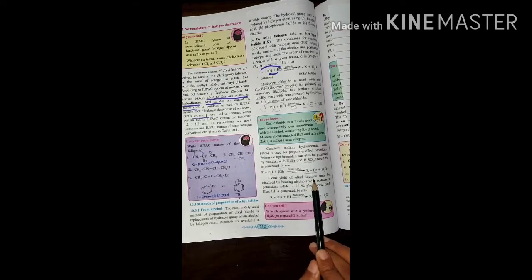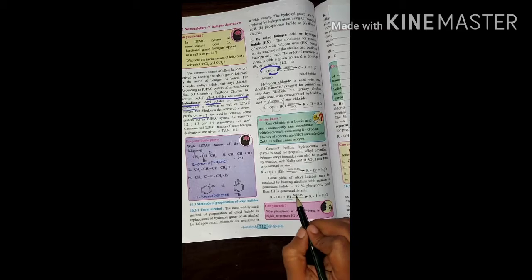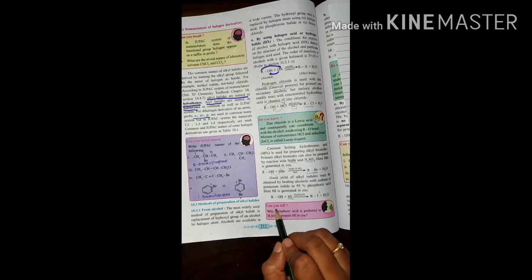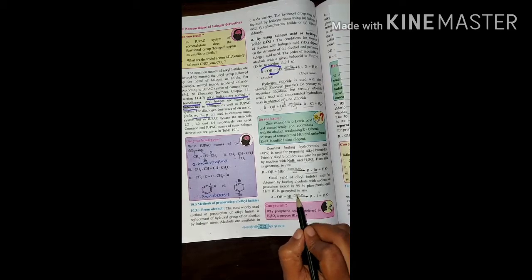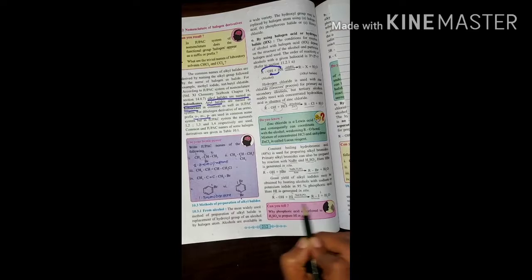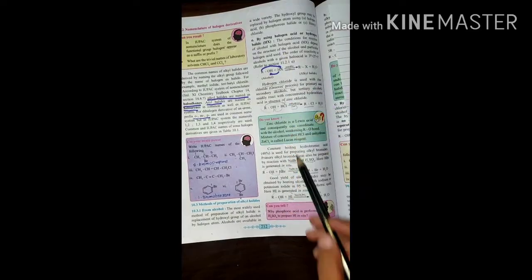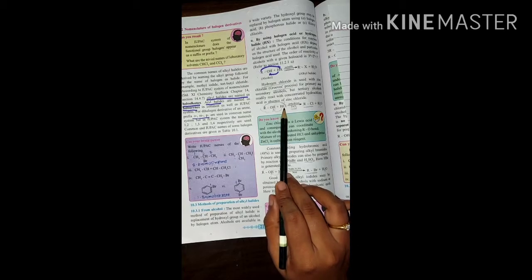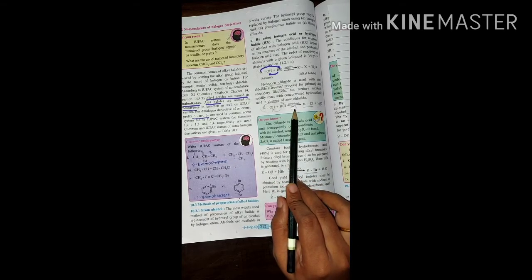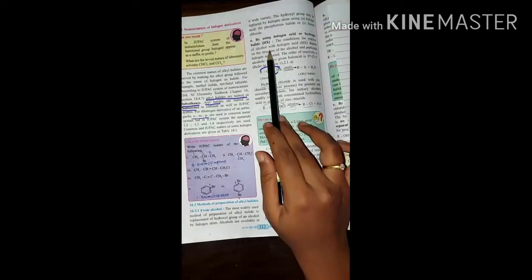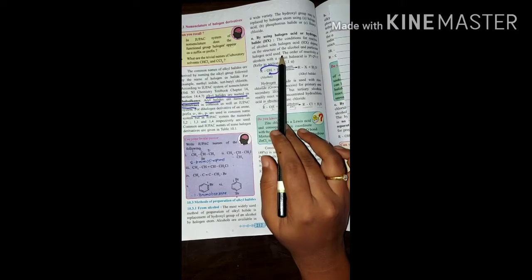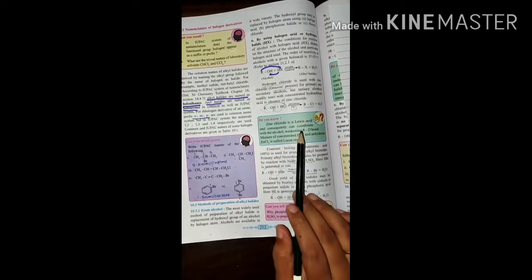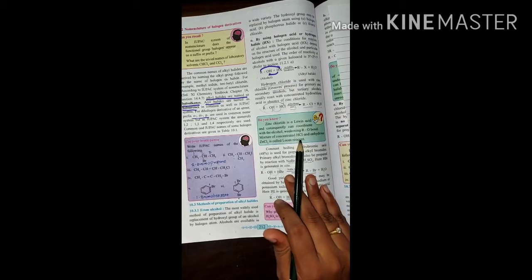Good yield of alkyl iodide is obtained using NaI and H3PO4, which is 95% phosphoric acid. This is really important. Make notes for this - the reagent for alkyl iodide is NaI and H3PO4. Thank you.